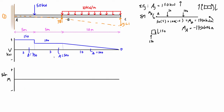For the bending moment diagram, we start at negative 1750 kN·m at point A. In the first region, positive shear area of 750 brings us to −1000 kN·m at 5 meters. The next area of 500 brings us to −500 kN·m at 10 meters. The final area of 500 is positive and the shear is linear, so the moment follows a parabolic shape that brings us right back to zero at the free end.